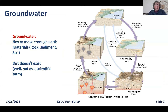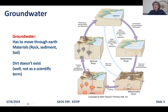Groundwater has to move through and is stored in earth materials. That means we are dealing with igneous rocks like those on the north shore of Lake Superior, sediment like much of the surface aquifers in Minnesota, sedimentary rock like the aquifers in southeastern Minnesota, and metamorphic rock found across much of northern and some central Minnesota. Understanding the nature of these materials is very important for understanding groundwater.